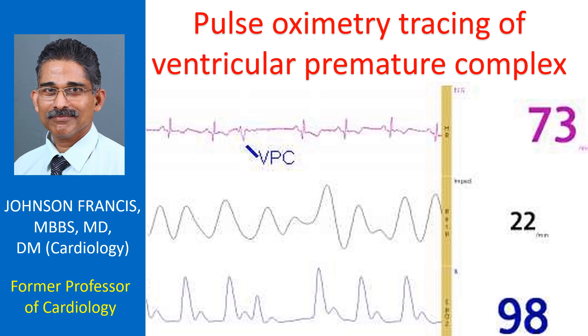Monitor screenshot showing ECG, respiration by thoracic impedance and pulse oximetry waveform. The upper tracing shows an ECG at rate of 73 per minute.